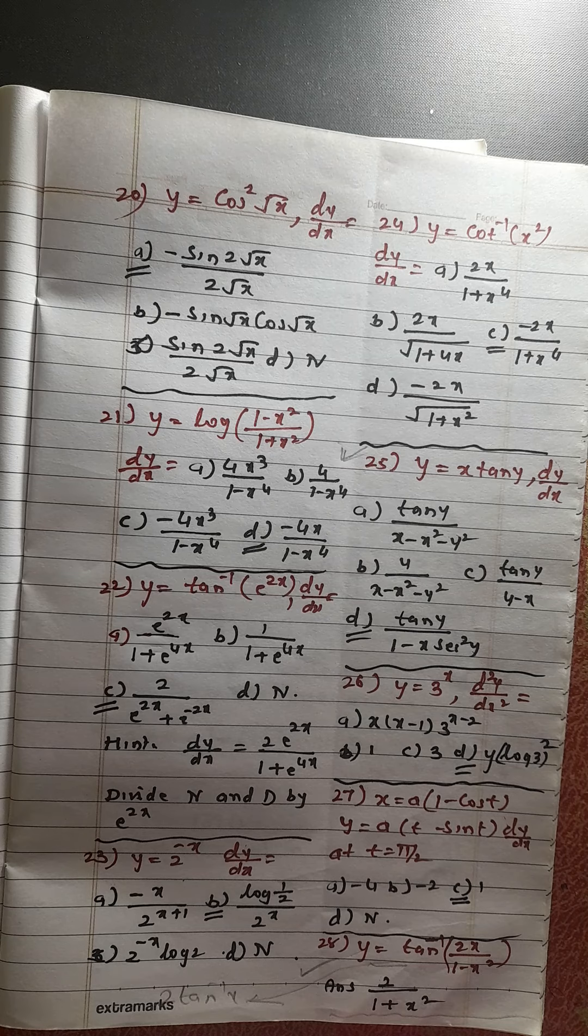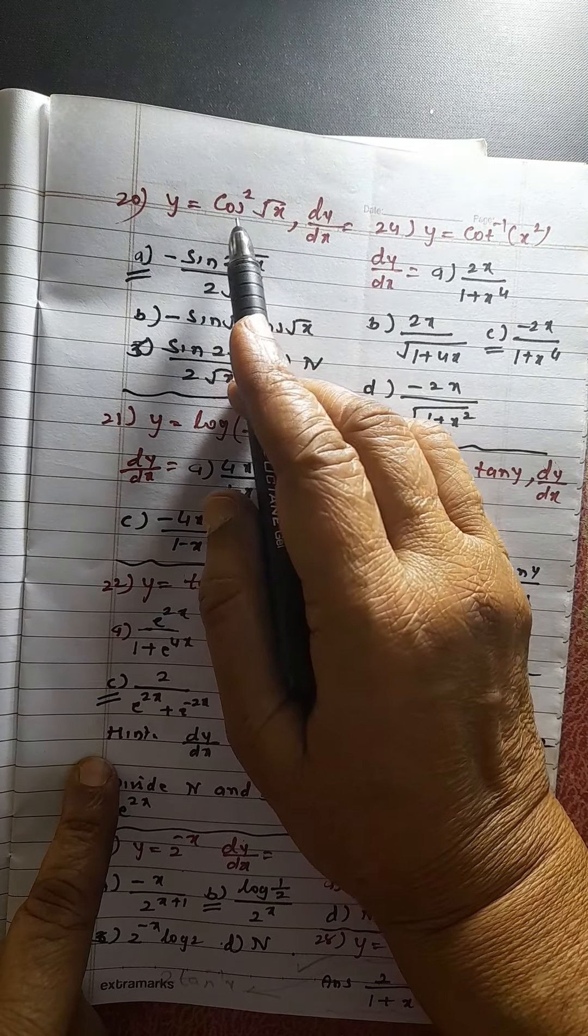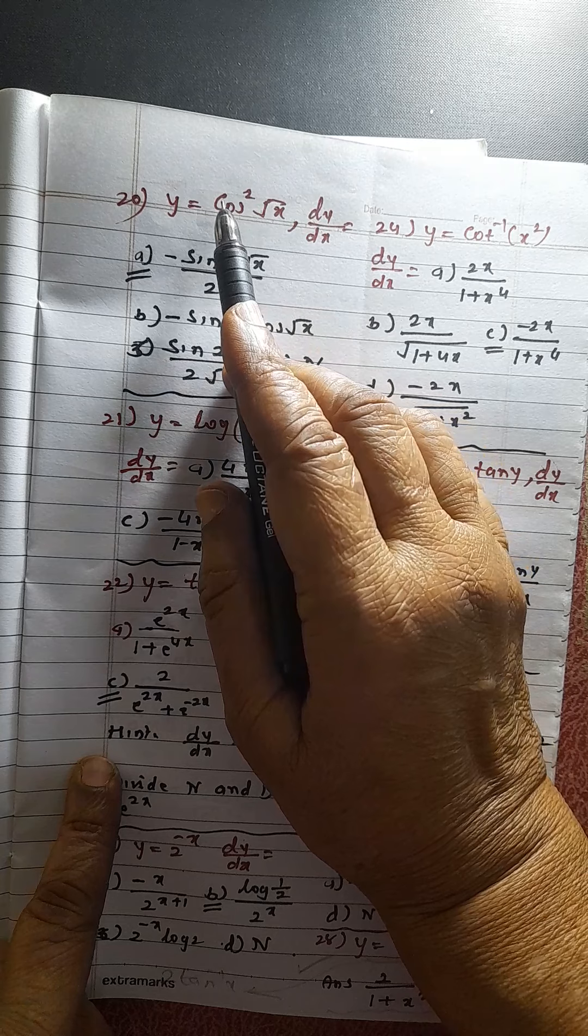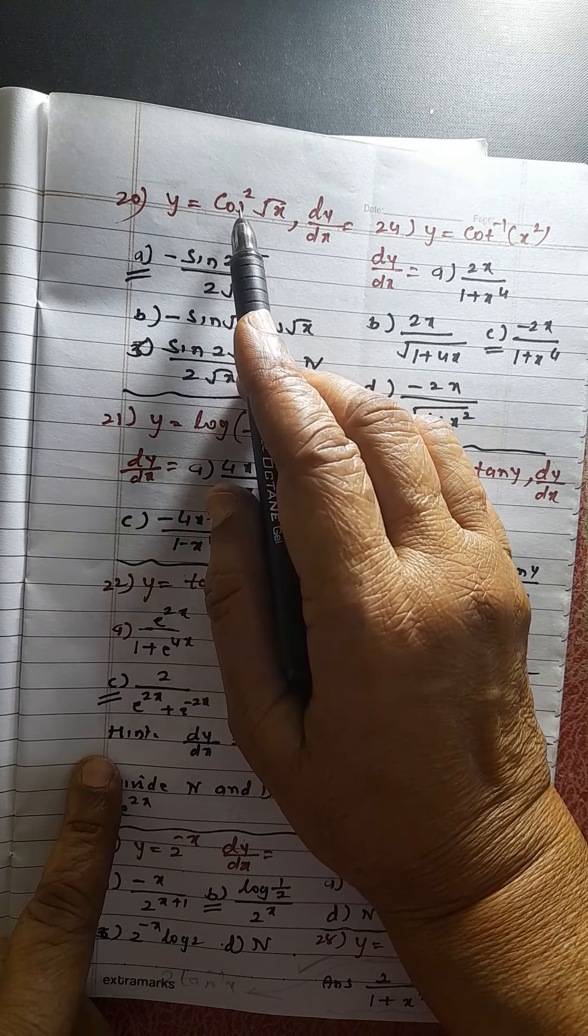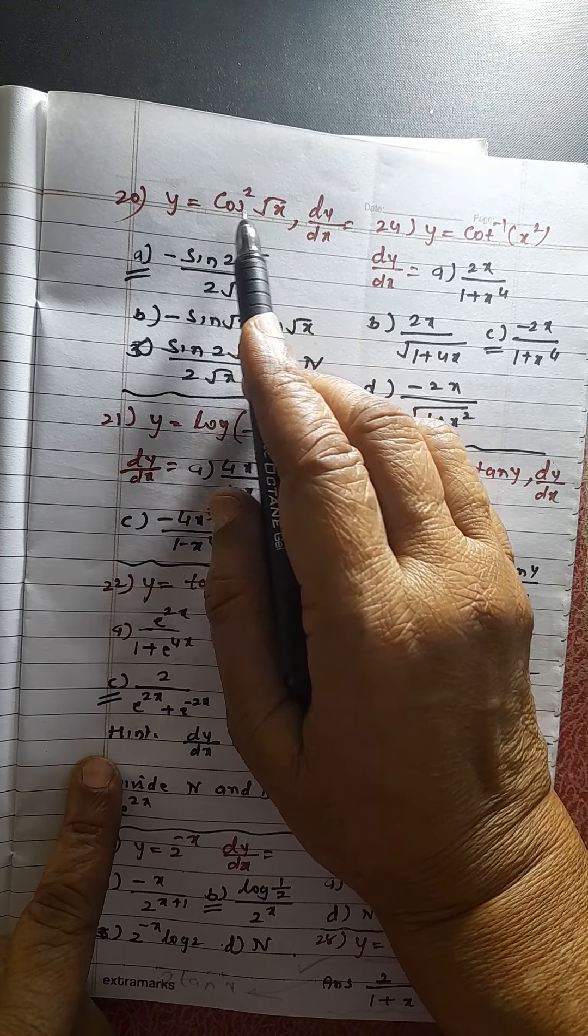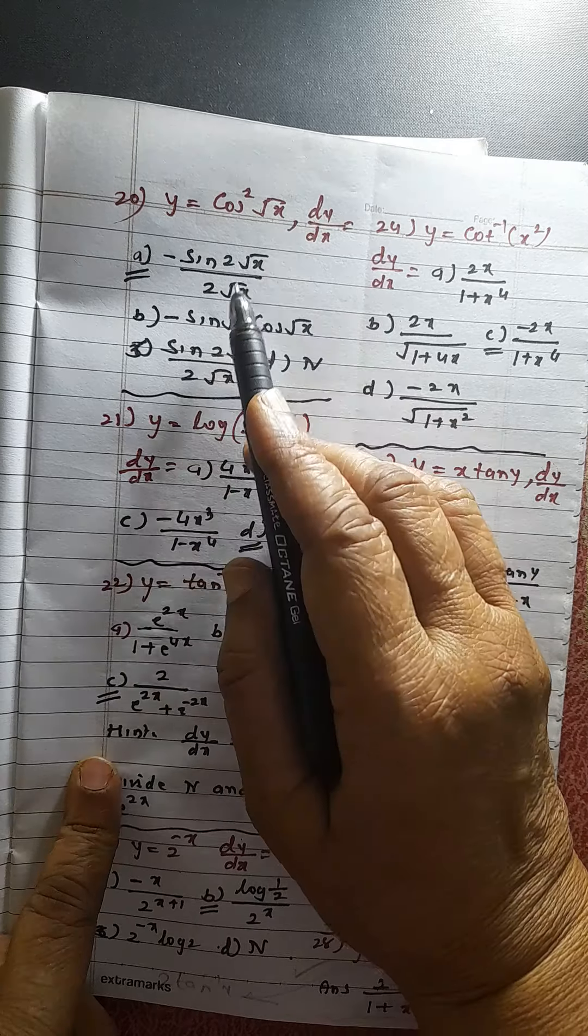All these problems are also very easy. Only thing if you want to find out. This is cause of root x whole square. So derivative will be 2 cause of root x into sine of root x into derivative of root x. So this is your answer.